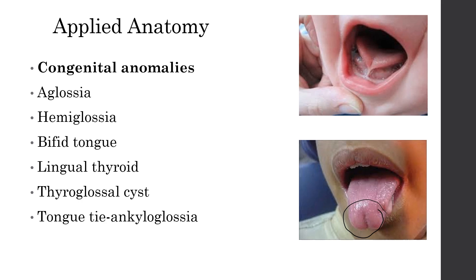There is a lingual thyroid. We have seen that there is a foramen cecum at the junction of the anterior two-third and posterior one-third of the tongue, which is the point where the sulcus terminalis begins. From here there is the beginning of the thyroglossal duct. Sometimes the thyroid gland may be found within the tongue, and that is called the lingual thyroid. Also, this duct may develop into a cyst, called the thyroglossal cyst.